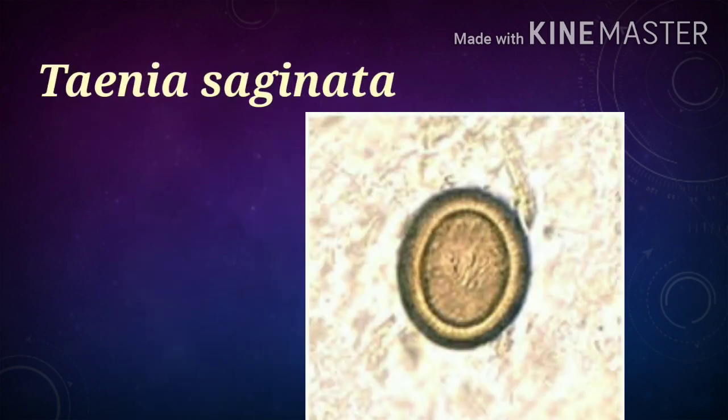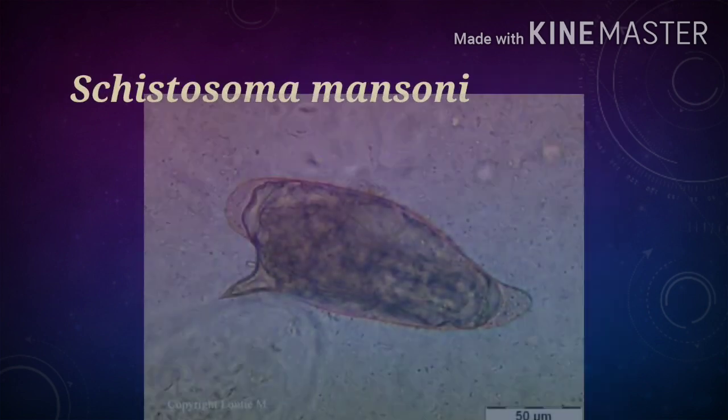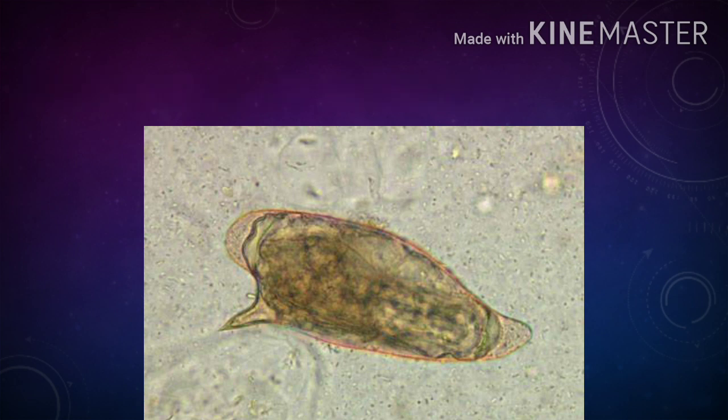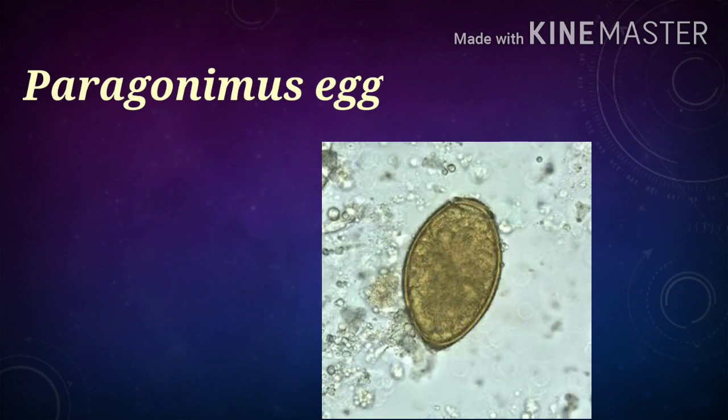Next we watch Taenia saginata. The microscopic view of a single Taenia saginata is shown at 40X objective in the microscopic field. The next picture shows Schistosoma mansoni, and then the picture shows Schistosoma mansoni egg in the microscopic field.